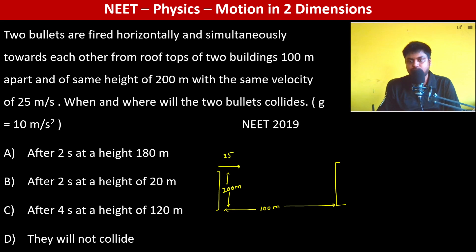Both sides it is 25 meters per second. Now let us say when and where they are colliding. Let's say they are colliding after time t. That means this bullet has travelled 25t in the horizontal direction, and this bullet has also travelled 25t in the horizontal direction.